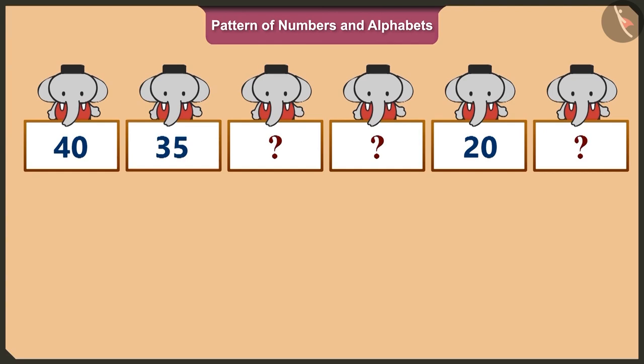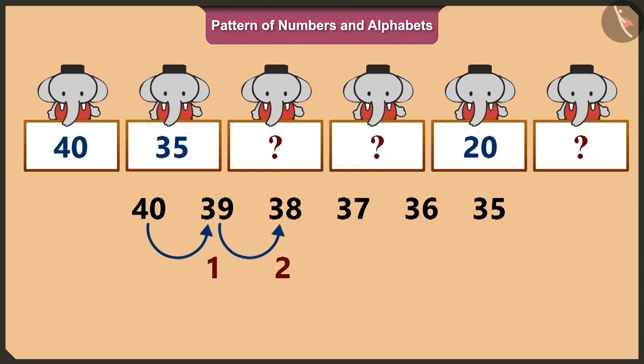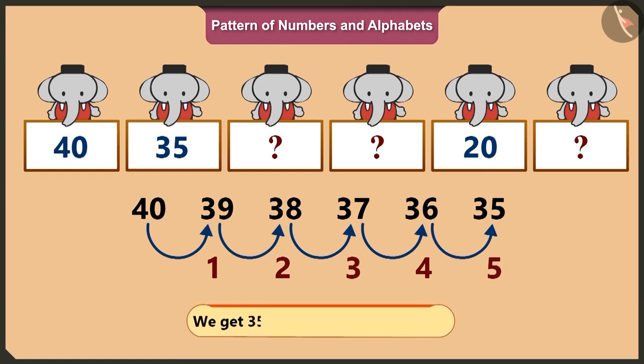Vinny, in this pattern, the numbers are in descending order. Hence, we have forty, thirty-nine, thirty-eight, thirty-seven, thirty-six, thirty-five. Which is one, two, three, four, five. On subtracting five from forty, we get thirty-five.